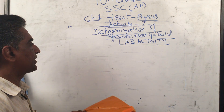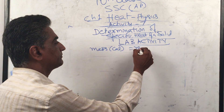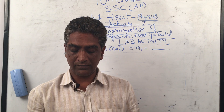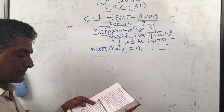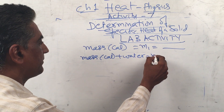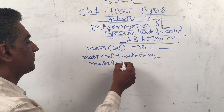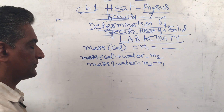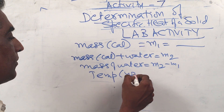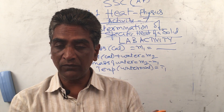Procedure: Measure the mass of the calorimeter along with the stirrer — call it m1. Then fill one third of the volume of the calorimeter with water and measure its mass. Mass of calorimeter plus water is m2, so mass of water is m2 minus m1. The temperature of the water in the calorimeter is t1. Note that the calorimeter and water are at the same temperature.